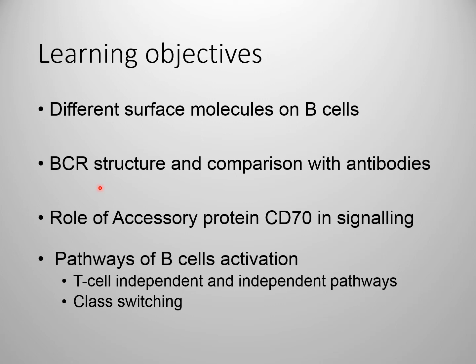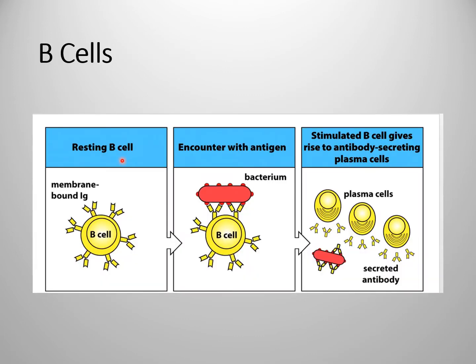We will study the structure of B cell receptors and comparison with antibodies, and the role of accessory proteins like CD79 in signaling. Eventually we will study the pathways of B cell activation — T cell dependent and T cell independent — and how class switching of antibodies is done. Resting B cells have a membrane-bounded immunoglobulin as their receptors, called B cell receptors.